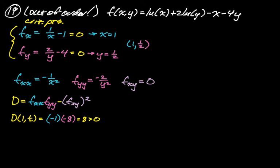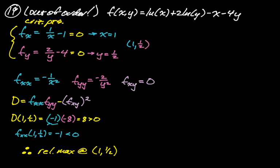Since D > 0, we have either a maximum or minimum. We look at partial xx at (1, 1/2), which is -1, less than 0. This means the trace is concave down, so we have a relative maximum. I'll be back in another video for number 15, which is a doozy. I hope this was helpful — good luck.